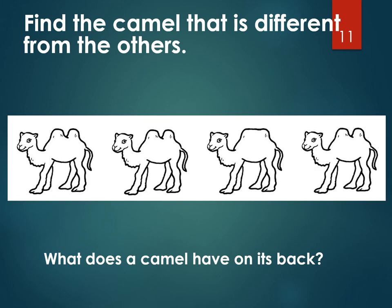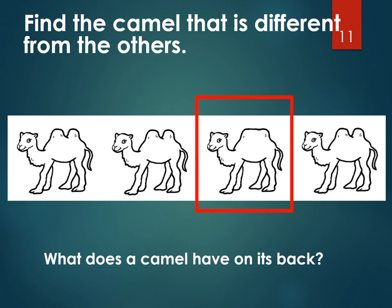Now we have a bunch of camels. Can you find the camel that is different? Did you point to this camel? If you did, then you are correct. What's different about this camel? What do camels have on their back? It's called the hump. Three of the camels have double humps — they are double-hump camels. But this one camel doesn't have two humps. Instead, he has one big hump on its back. Isn't that a funny camel?